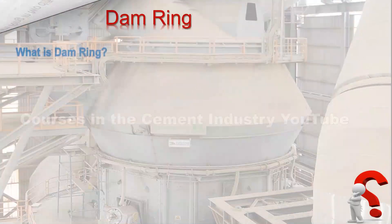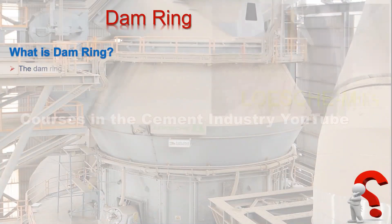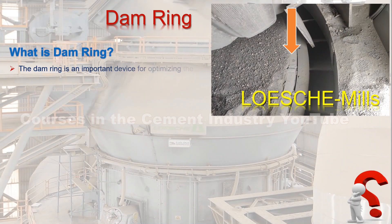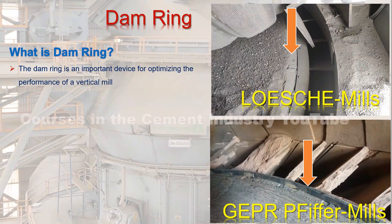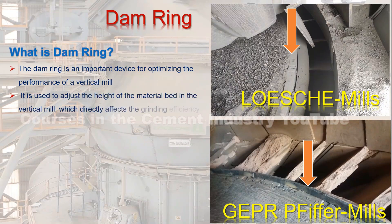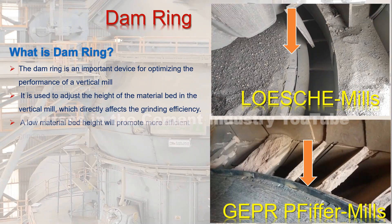What is a dam ring? The dam ring is an important device for optimizing the performance of a vertical mill. It is used to adjust the height of the material bed in the vertical mill, which directly affects the grinding efficiency. A low material bed height will promote more efficient grinding.